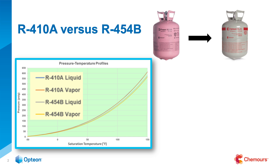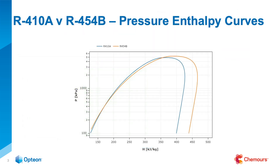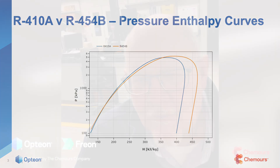Another thing engineers like to do is look at the pressure-enthalpy curves and see how closely they match in terms of pressures, net refrigeration effect, and those types of things. Again, you can see they're very, very similar. There's a little spacing on the right side, which basically means you get a little more net refrigeration effect, but some of that changes based on your system. You like to see this kind of agreement when you're getting a new refrigerant and want it to perform like an old one.